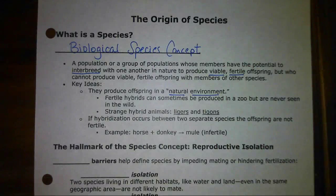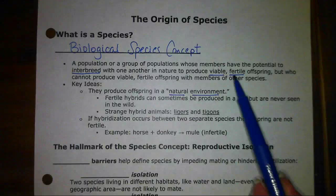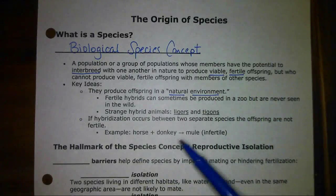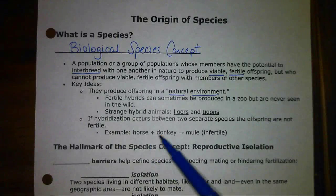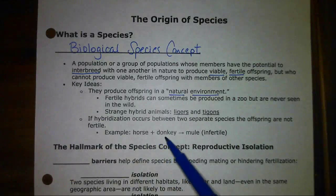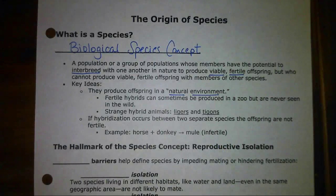The answer to that question involves thinking about their habitat and where they might live in the world. Also, since in this definition they have to produce viable and fertile offspring — with fertile offspring being the main idea — for example, a horse and a donkey, even though they can mate and produce a mule, we consider them different species because the offspring they produce are actually infertile, so they do not fit this true definition of what we would consider a species.